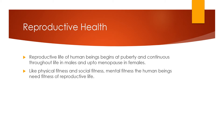The reproductive life of human beings begins at puberty. Before puberty, there is a juvenile phase. Puberty is when the development of secondary sexual characters occurs, around the age of 12 to 13 years. From puberty, it continues throughout life in males, but it is up to menopause in females.